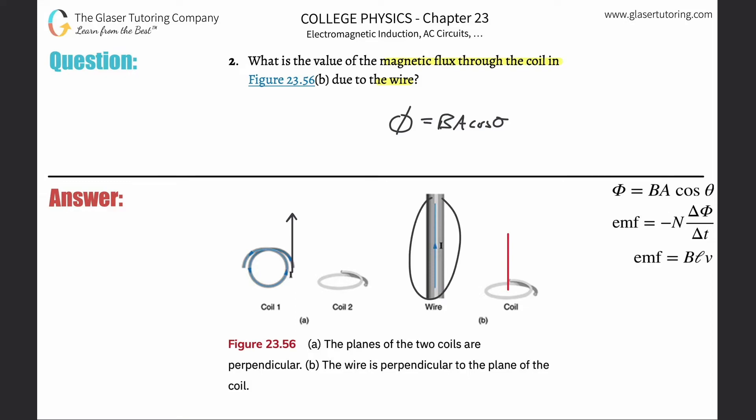Notice the wire here has a current going upwards, and the magnetic field that is created according to right-hand rule number two, which we covered back in Chapter 22, is going to circle around that particular wire.